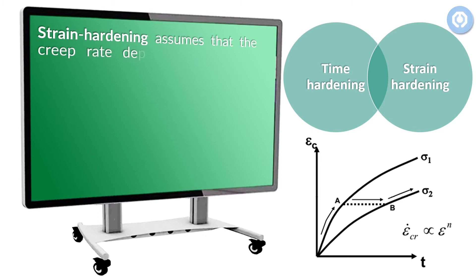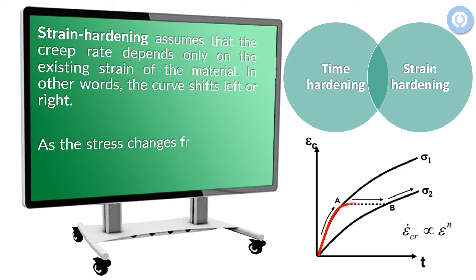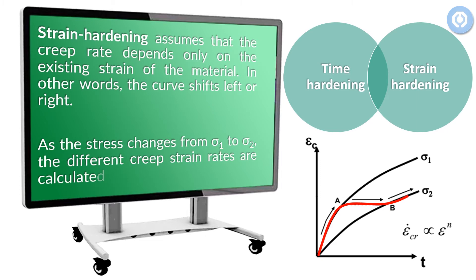In strain hardening, as stress changes from sigma 1 to sigma 2, the different creep strain rates are calculated at points A to B. In other words, the curve shifts left and right, and the different creep strain rates are calculated at those corresponding points.